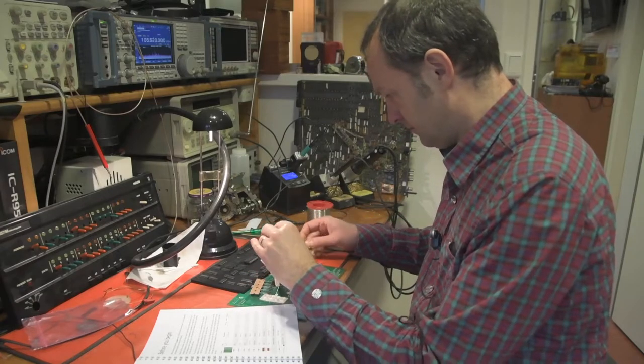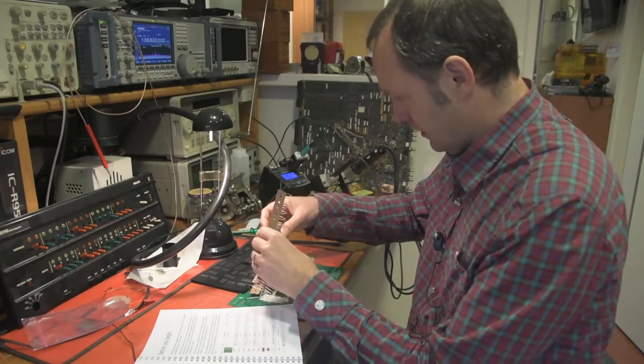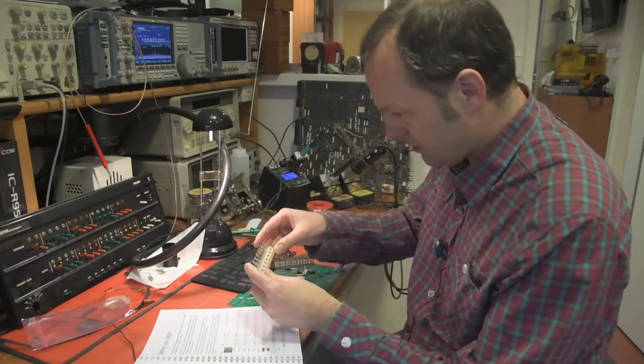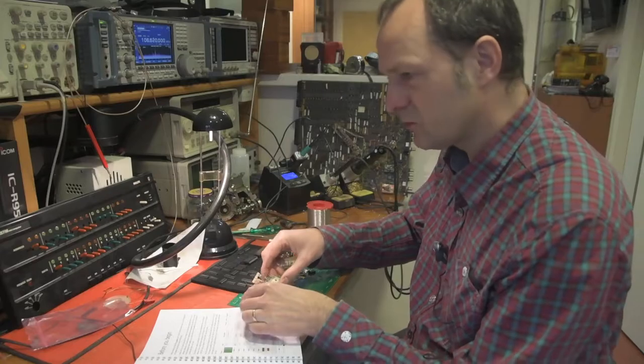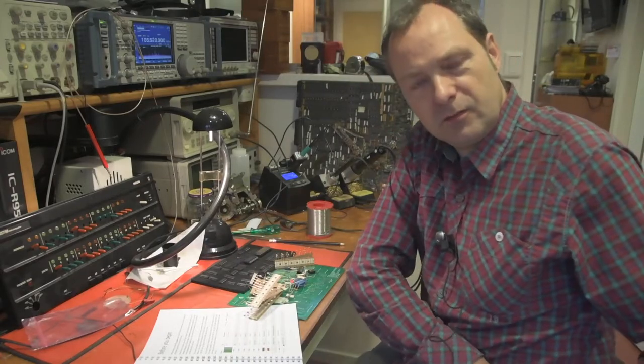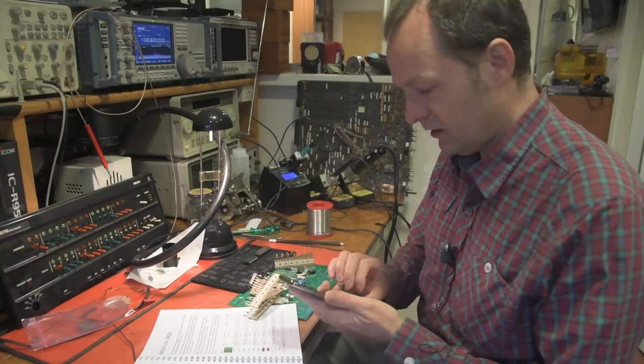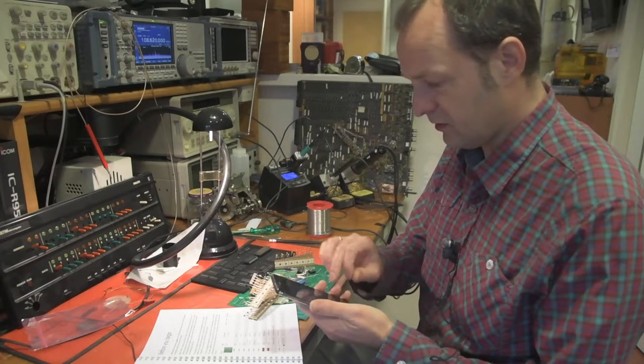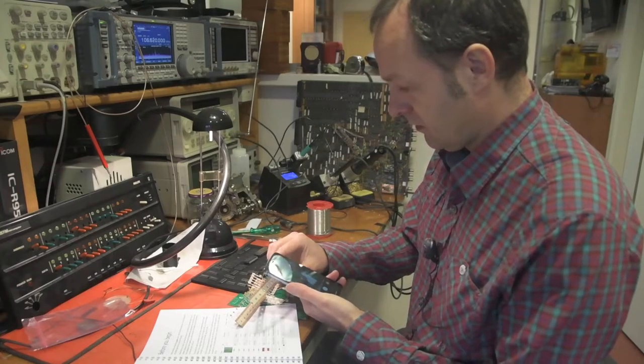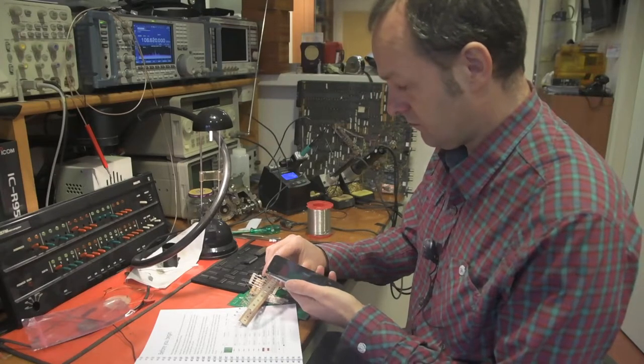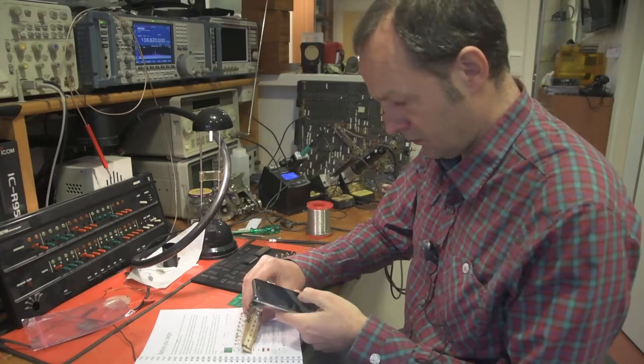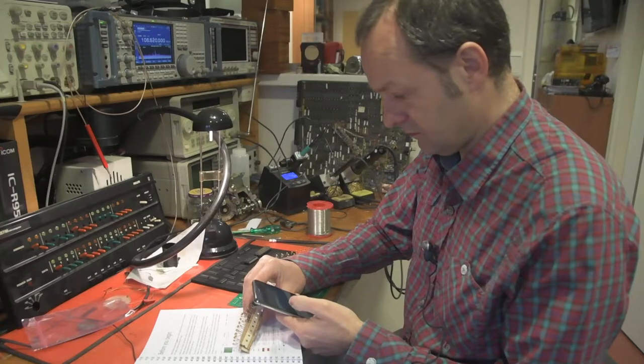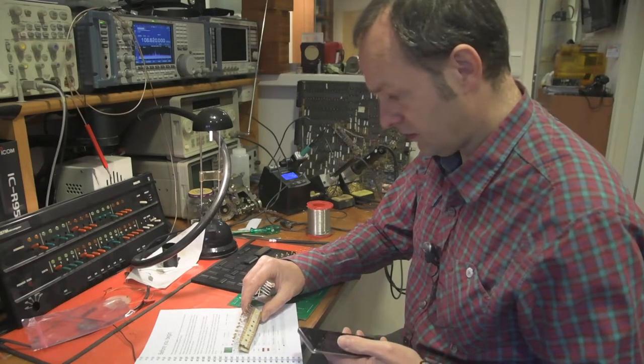Let's take a look. These have tiny markings on them, so I probably need some kind of loop to read this. But something that everybody probably has is a mobile phone. And if you take the camera application, that makes a nice loop as well. So, I can try and see what's written on here.